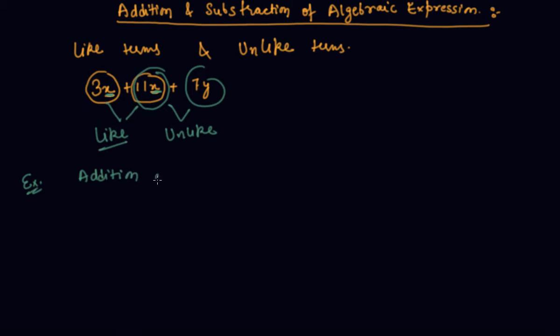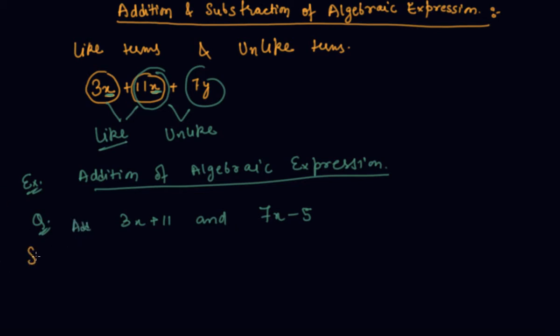Addition of algebraic expression. Here is the question: Add 3x + 11 and 7x - 5. As I told you students, we have to add these. What are the different like terms here in the two expressions? 3x and 7x. So I will add 3x and 7x separately, and 11 and minus 5 separately. You can write this also. So this is 10x + 6. 11 minus 5 will be 6.